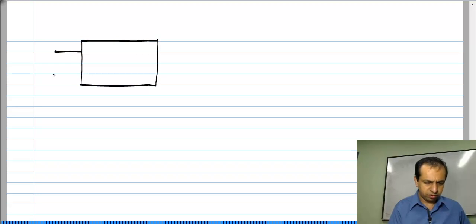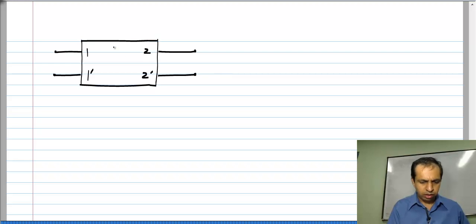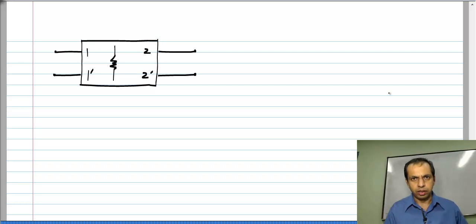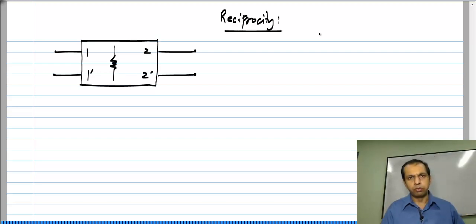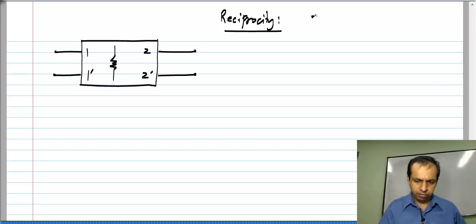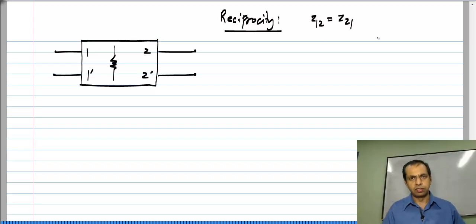Let us say we have a four-terminal two-port and it consists only of resistors. What is it that we want to prove? We can prove this in terms of any of the four parameters. Let us say we think of proving Z12 equals Z21 for this network.